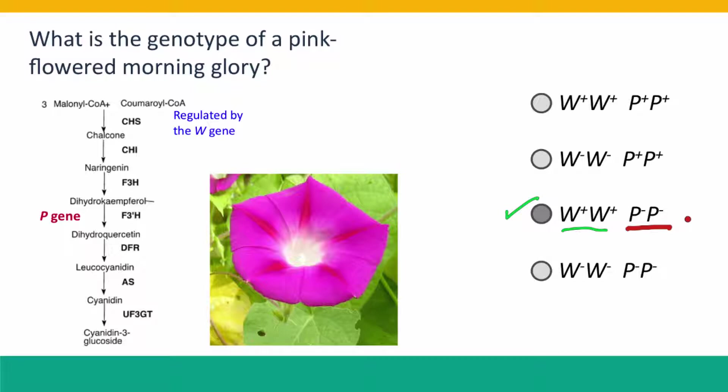In this case, the pink phenotype is entirely explained by a mutation in the P allele, so there's no reason to assume it also has a defect in the W allele.